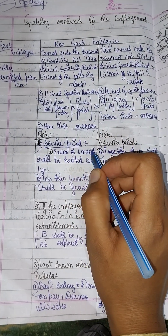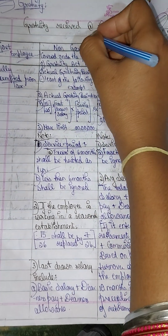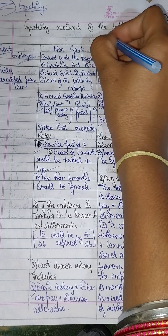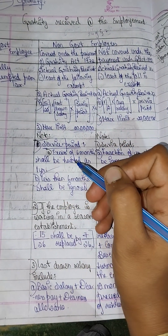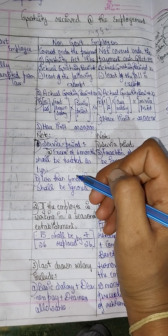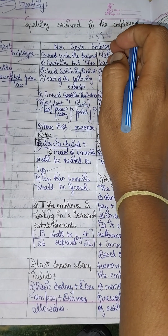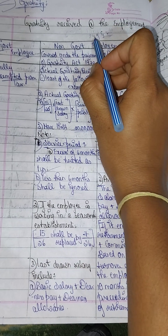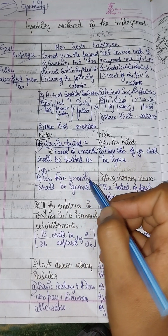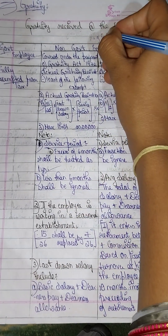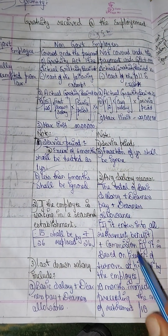Note on service period: excess of 6 months shall be treated as one year. For example, 24 years and 7 months — since 7 months is more than 6 months, it shall be treated as 25 years. If the fraction is 4 months, which is less than 6 months, it shall be ignored. This is the service period calculation.